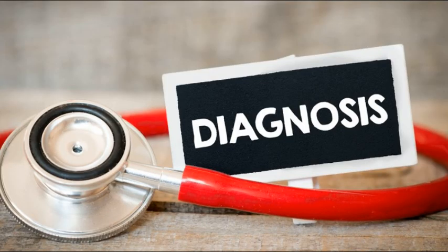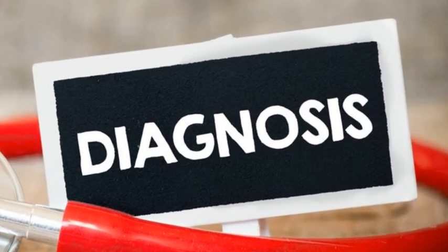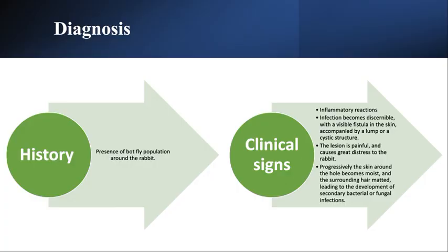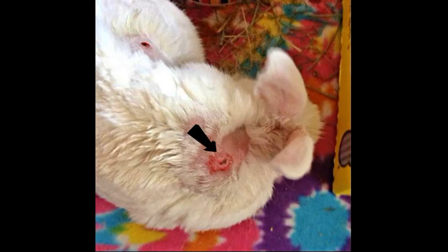Now, the diagnosis part. Diagnosis of bot fly myiasis can be done by history and clinical signs. Clinical signs are generally sufficient for a proper diagnosis. History includes the presence of bot flies around the environment of the rabbit. Clinical signs include presence of an inflammatory reaction, visible fistula or cyst in the skin, or you may also notice live bot fly larvae oozing out from the fistula.